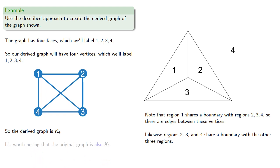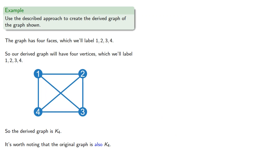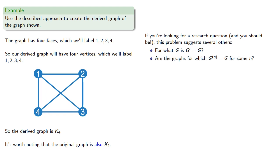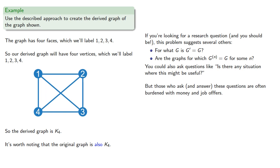So the derived graph is K4. And it's worth noting the original graph is also K4. Now a useful thing to do in mathematics is to look for problems, not solutions. And in this case, if you're looking for a research question, and you should be, this problem suggests several others. For what graphs G is G' equal to G? Are there graphs for which the nth derived graph is the original graph? You could also ask questions like, is there any situation where this might be useful? But those who ask and answer these questions are often burdened with money and job offers.